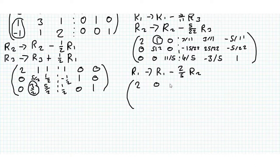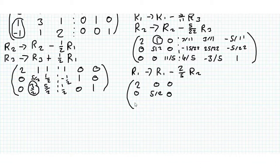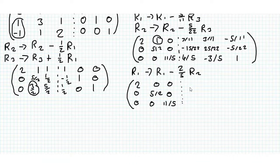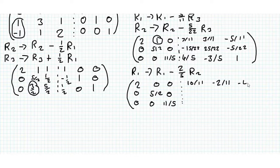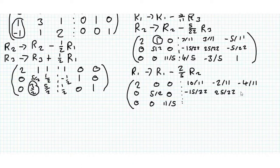And this gives us 2, 0, 0. 0, 5 over 2, 0. 0, 0, 11 over 5. And then on the other side we get 10/11, minus 2/11, minus 4/11. Minus 15 over 22, 25 over 22, minus 5 over 22. 4 fifths, minus 3 fifths, and 1. And we are almost finished now.